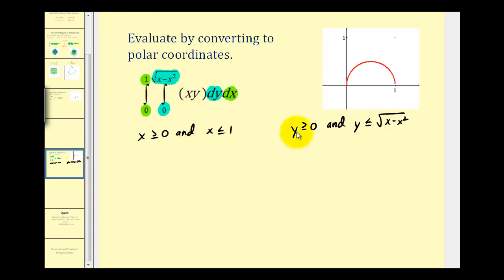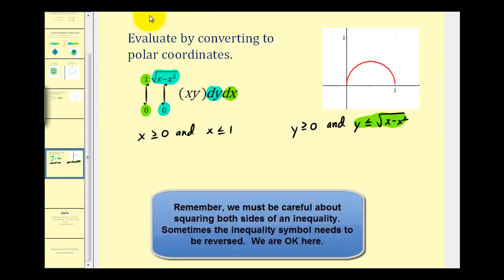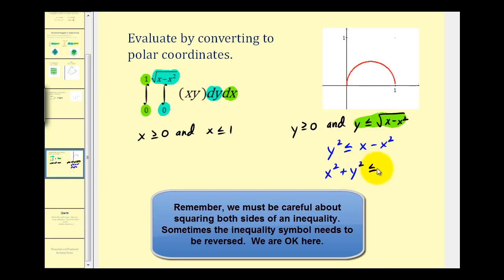Let's see if we can determine the region of integration from this. We know x is positive and y is positive, so we're dealing with the first quadrant. Let's focus on determining the graph of y ≤ √(x − x²). One thing we could do is square both sides, giving us y² ≤ x − x². If we add x² to both sides, we have x² + y² ≤ x.